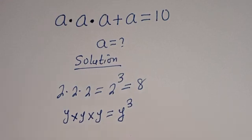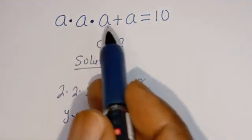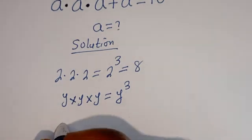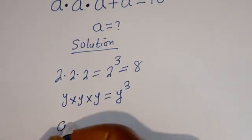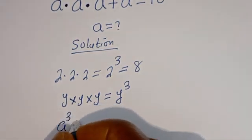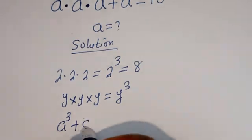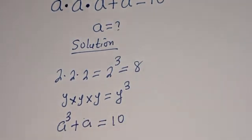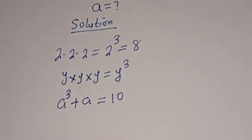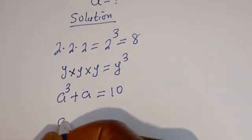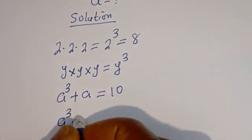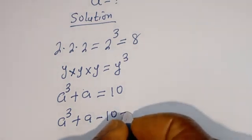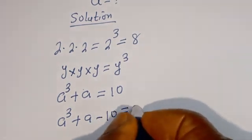Therefore, A multiplied by A multiplied by A is A to the power of 3, plus A is equal to 10. Then this gives us A to the power of 3 plus A minus 10 is equal to 0.